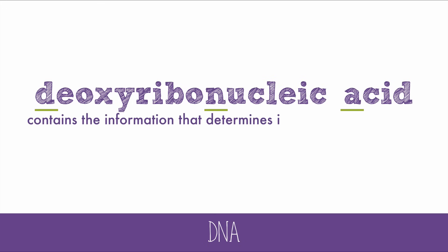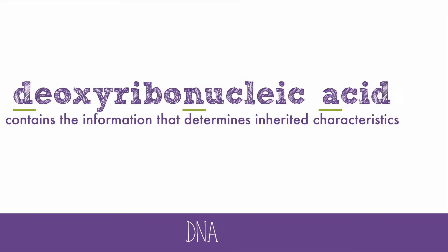DNA contains the information that determines inherited characteristics. It has the code for making proteins. DNA is found in the nucleus of eukaryotic cells and in the cytosol of prokaryotes.